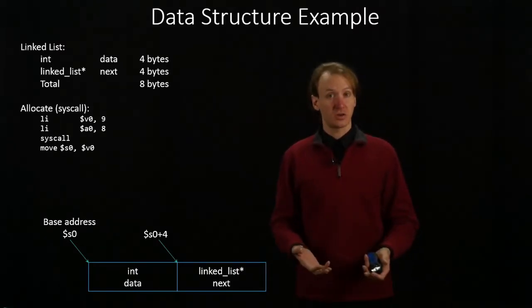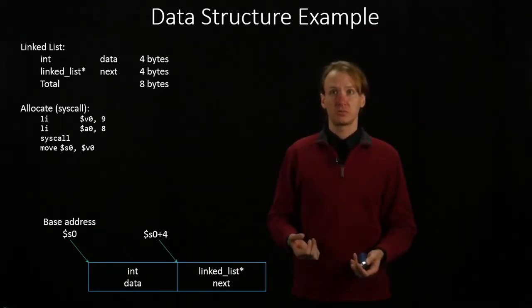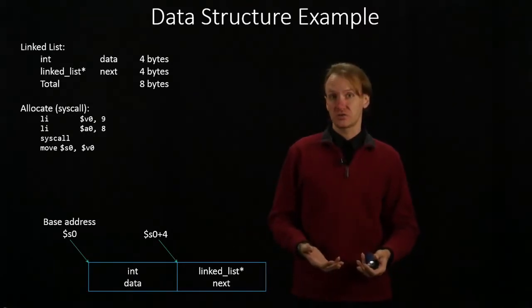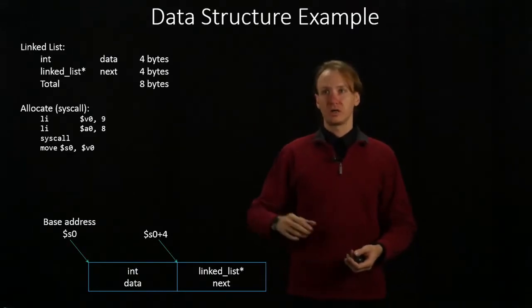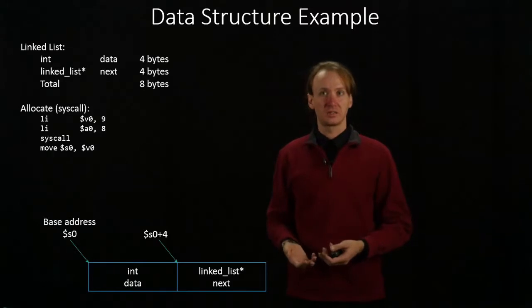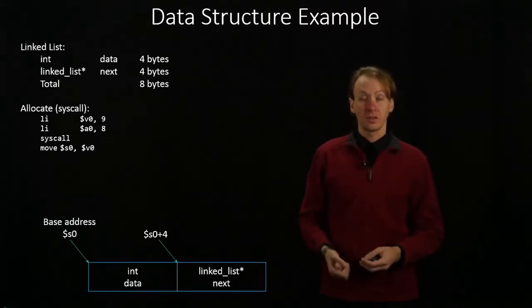If I want to allocate some memory for this data structure, I've got two options. I can use a syscall, in which case I'd use system call number 9, so I put 9 in V0. And then I put the size of my data structure into A0. My data structure is eight bytes, so I'll put an 8 into A0. And then I make the syscall.